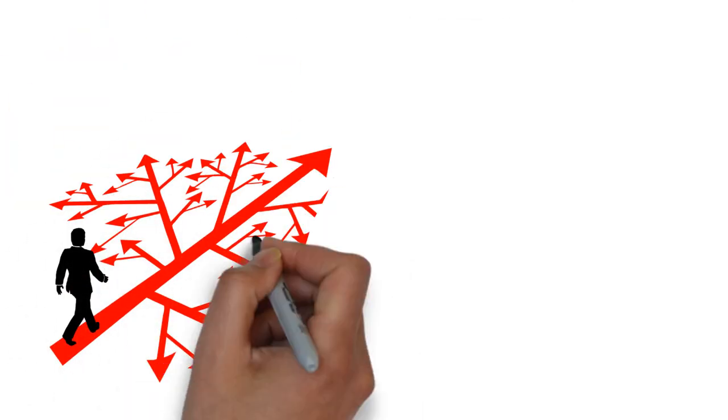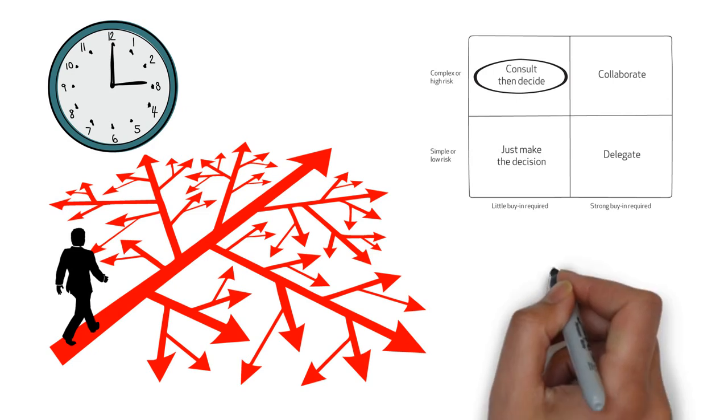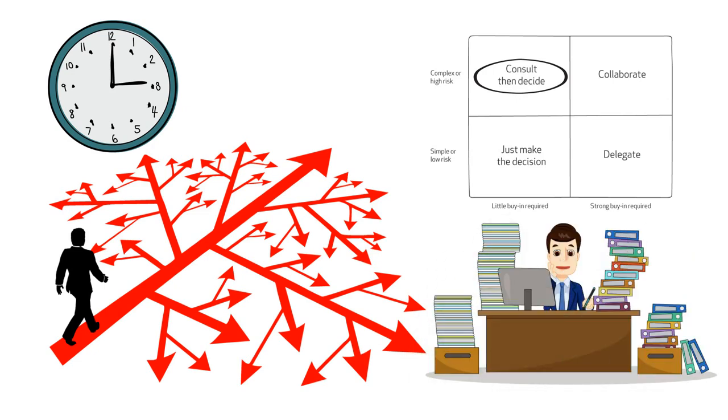When decisions become complicated or risky, it's best to take some time over them. Gather information from a number of sources and then, if people are unlikely to be upset by the decision, just decide after the consultation.